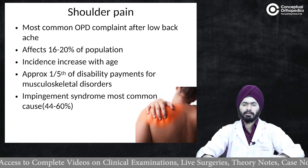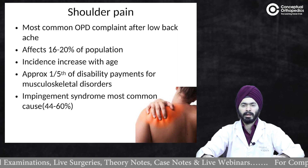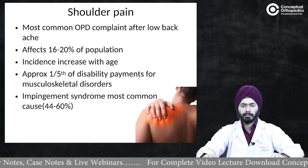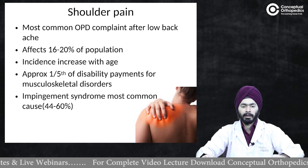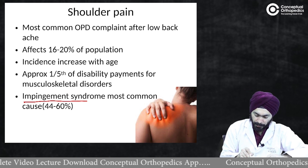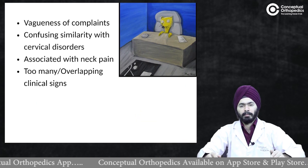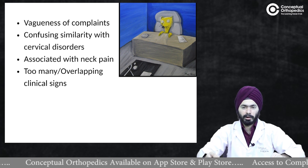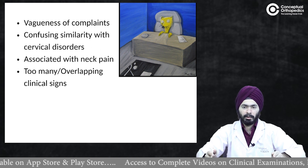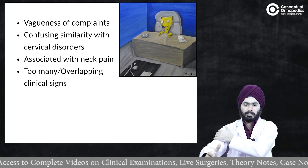Shoulder pain is one of the most common OPD complaints after low back ache — it is the most common complaint in orthopedic clinic. Shoulder pain can affect up to about 20% of the population at one time or another. Incidence increases with age, and the most important cause is impingement syndrome. The problem with impingement syndrome and many other shoulder pathologies is the vagueness of the pain, which is usually spread over a range or area rather than a single site.